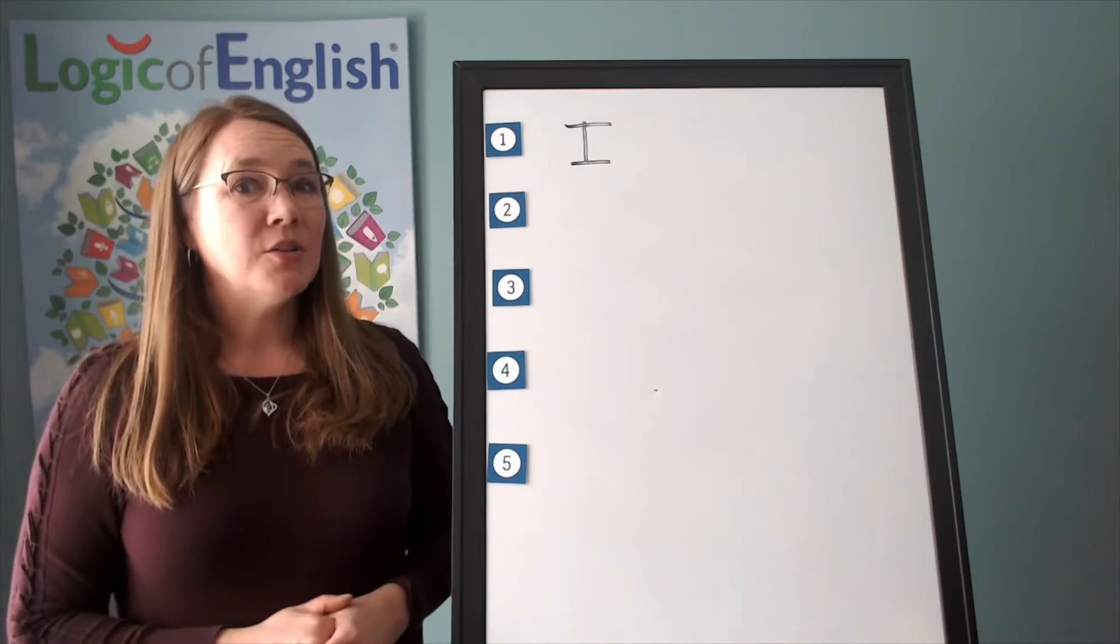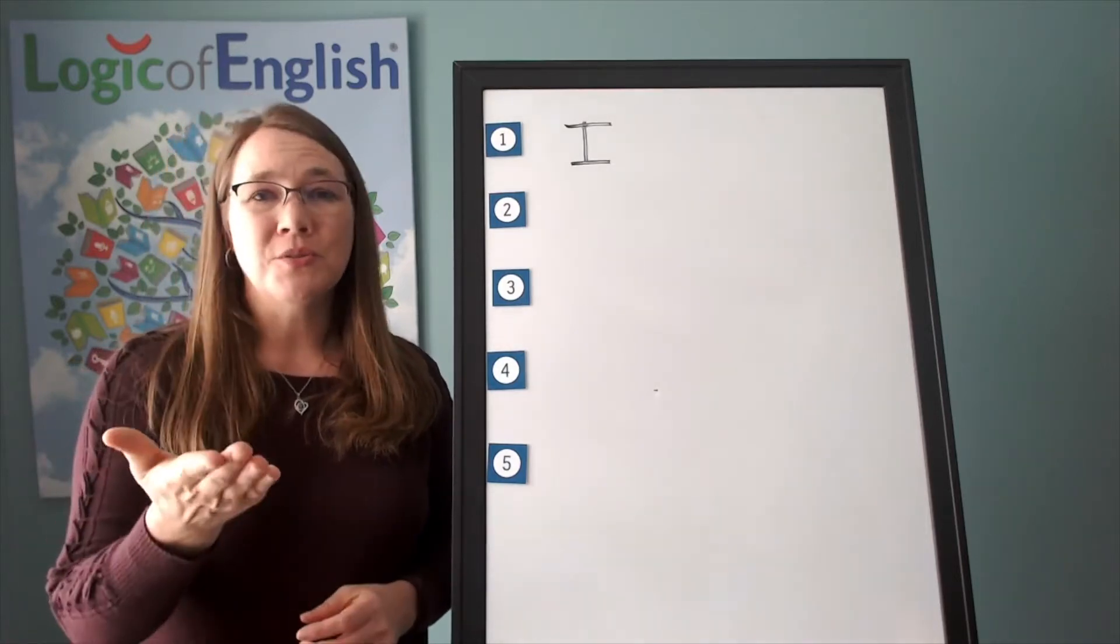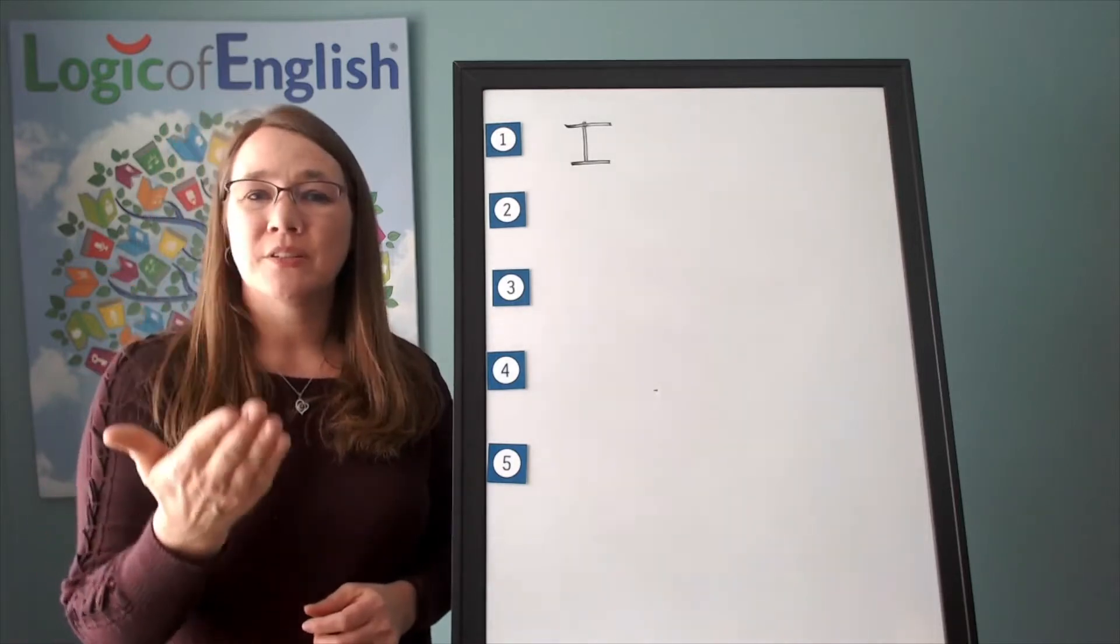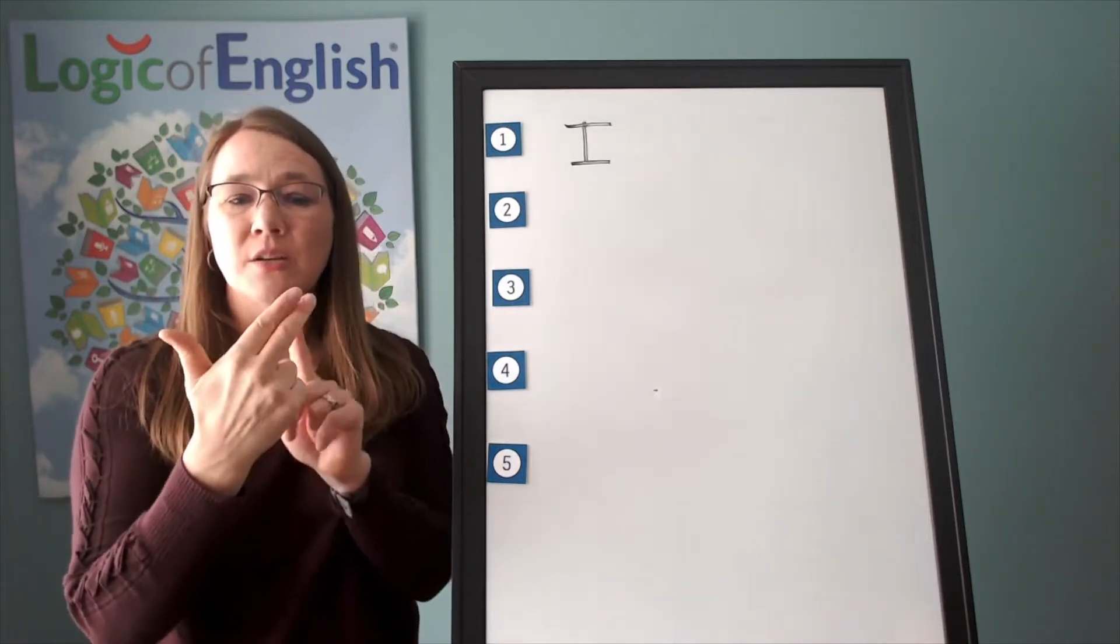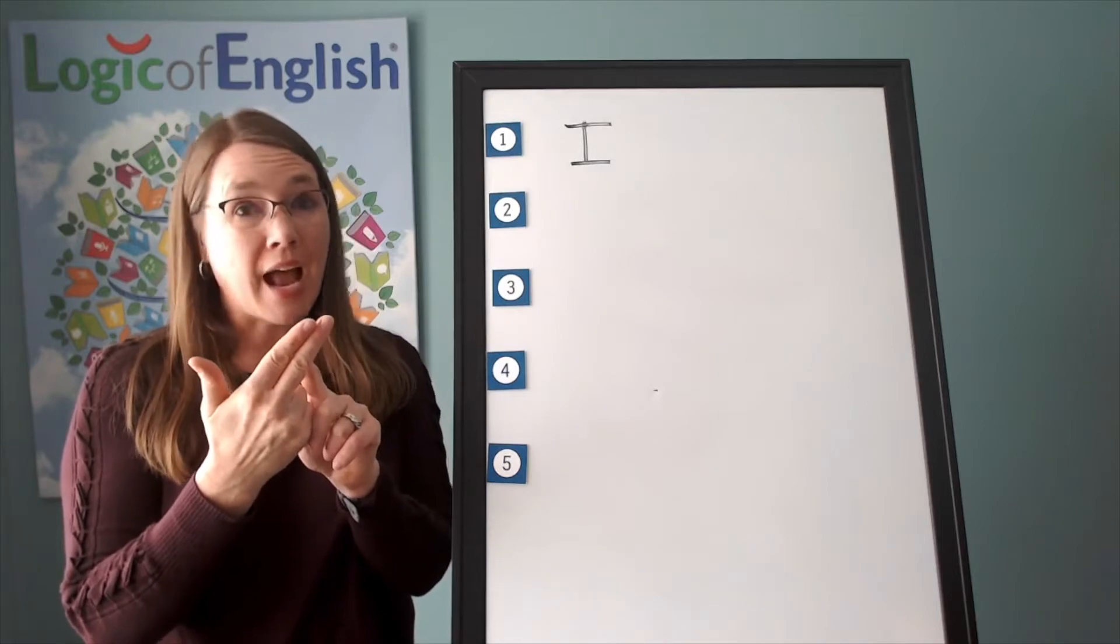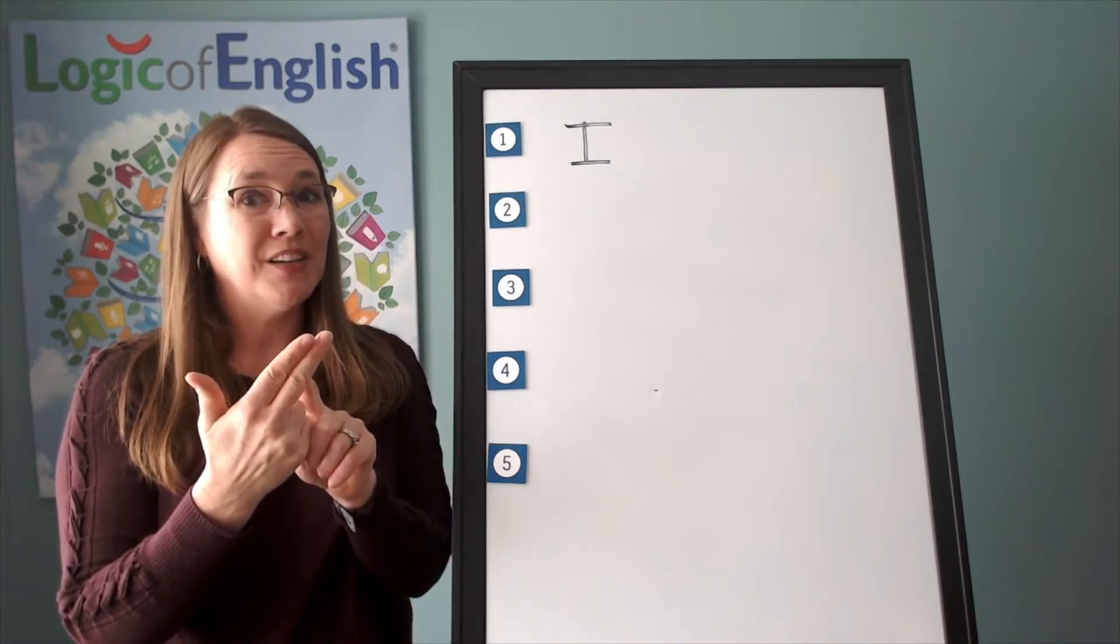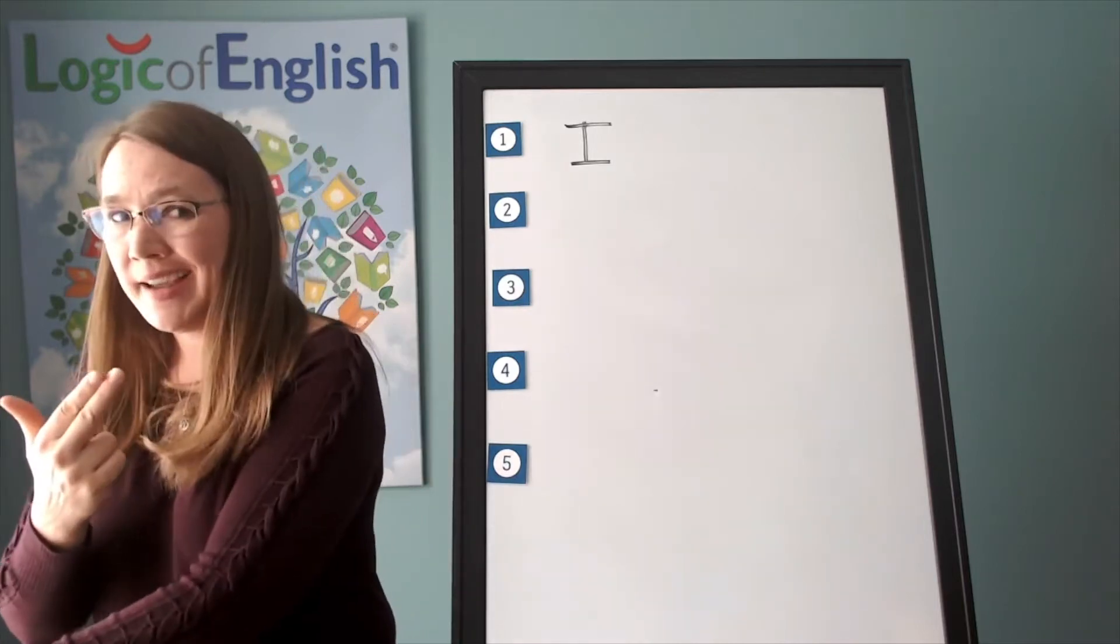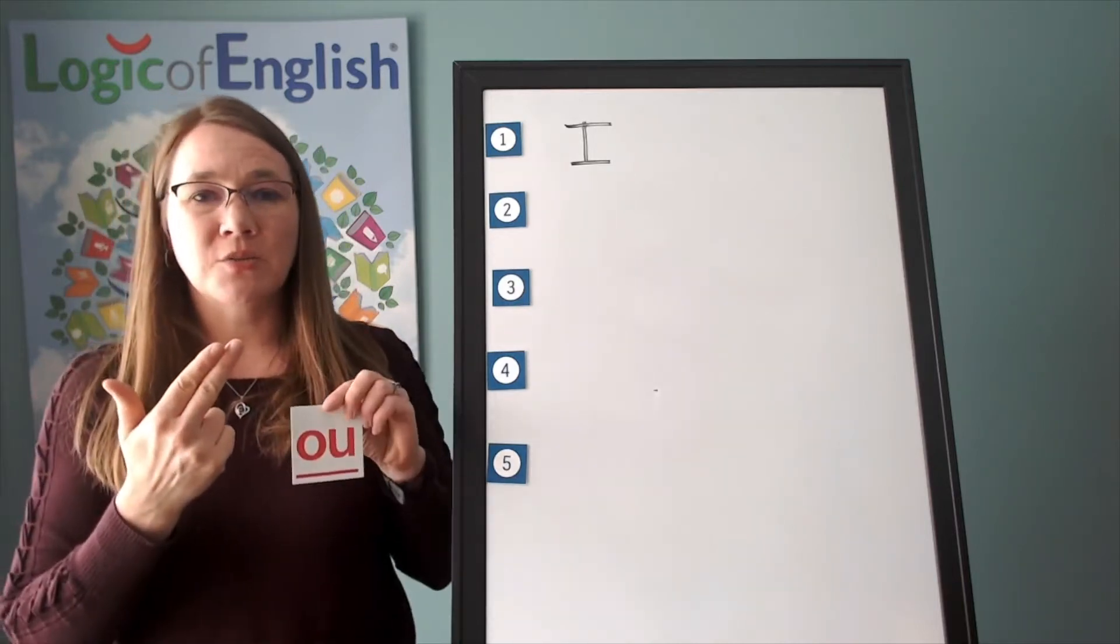The next word is you. You are a great student. You. Go ahead and say you. You. Let's sound it out. Ya. U. Use ow, o, oo, uh, uh. Do you know which one to use? Just in case you're confused, you're going to use this one.